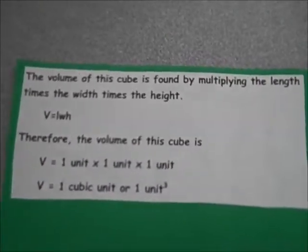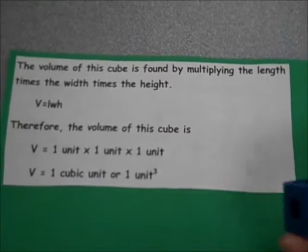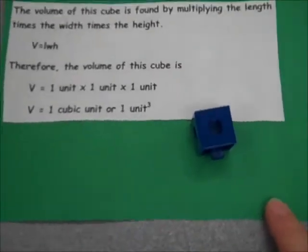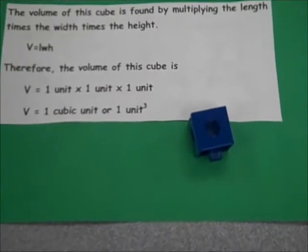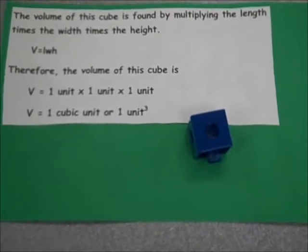The volume of a cube is found by multiplying the length times the width times the height. Therefore, the volume of this cube is one unit by one unit by one unit, one cubic unit.